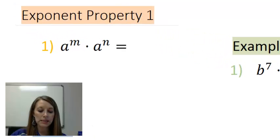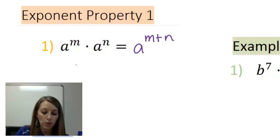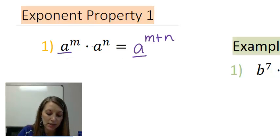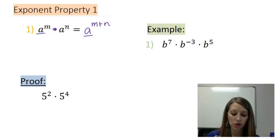Property number one says a to the m power times a to the n power. We can simplify that as a to the m plus n power. So when we have the same bases that are multiplied, we actually add the power. Now let me prove to you how this actually works.